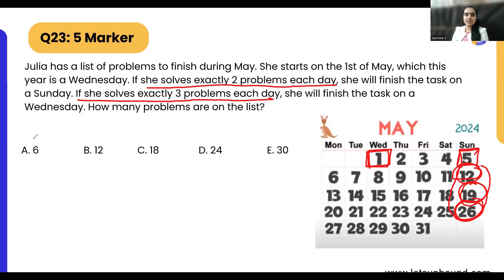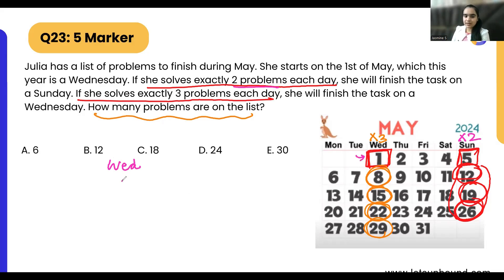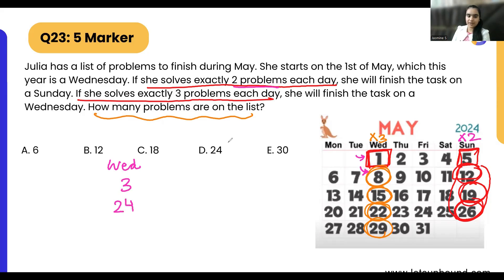If she solves exactly three problems each day, she will finish on a Wednesday. Wednesdays fall on the 1st, 8th, 15th, 22nd, or 29th. We need to find how many problems are on the list. For Wednesday finishes, we multiply the day by 3. For example, finishing on the 8th gives 8 times 3 equals 24 problems.